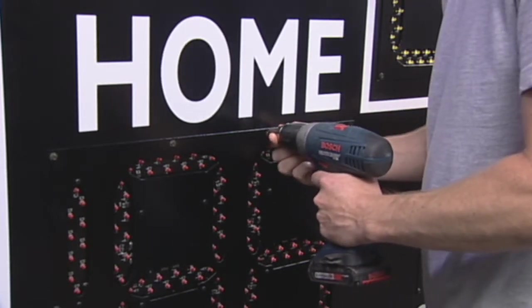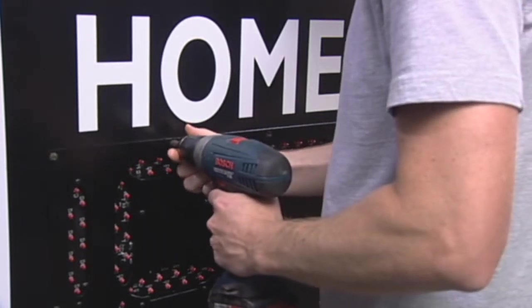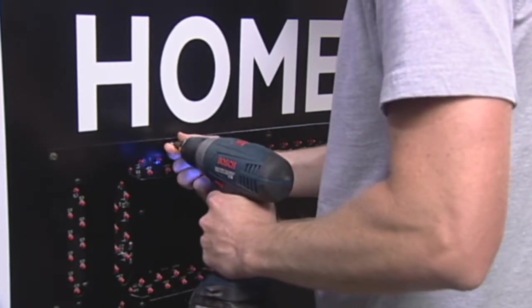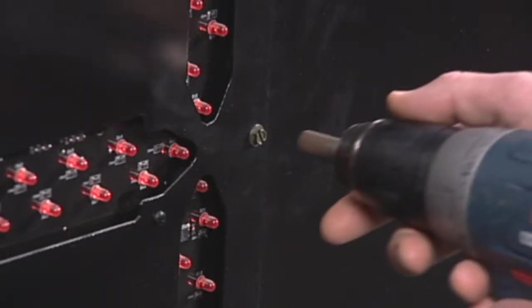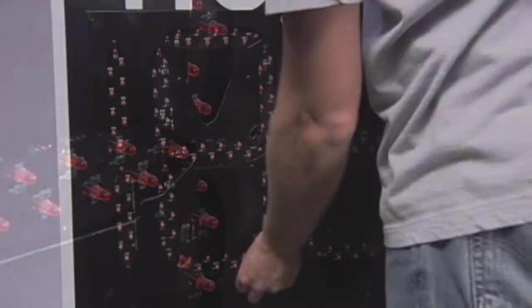Your service technician will instruct you as to exactly where the module access panel is located on your specific scoreboard. Use a cordless drill and a quarter-inch nut driver to remove the sheet metal screws holding the digit onto the face of the scoreboard.